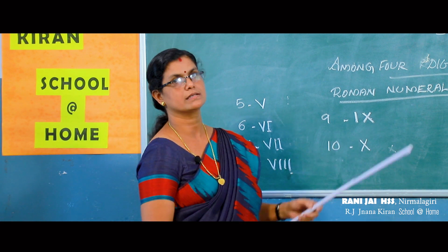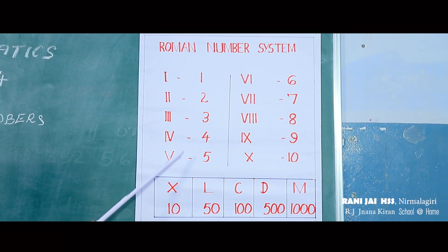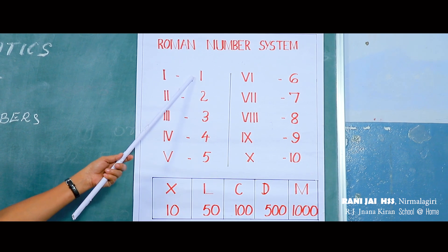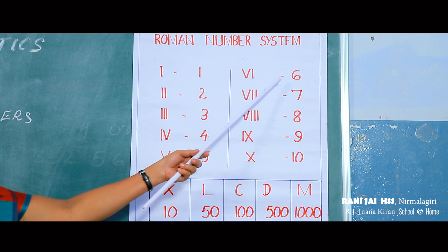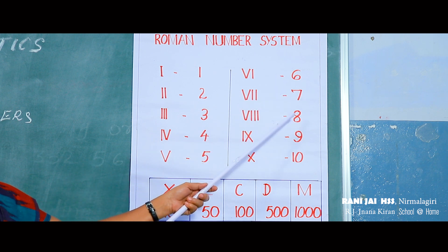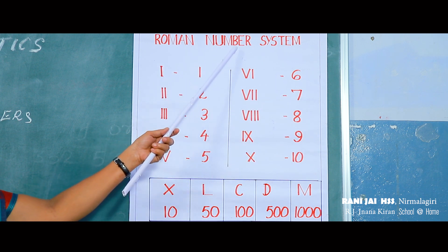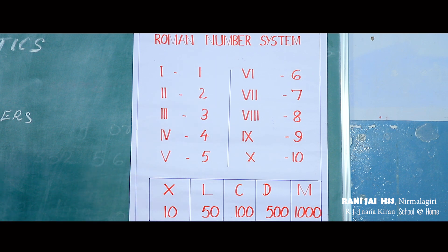Look at the chart. You can write down this Roman number system in your notebook neatly. The Roman numerals from 1 to 10 are: I, II, III, IV, V, VI, VII, VIII, IX, X. All of you write the heading 'Roman Number System' and copy this neatly in your notebook.